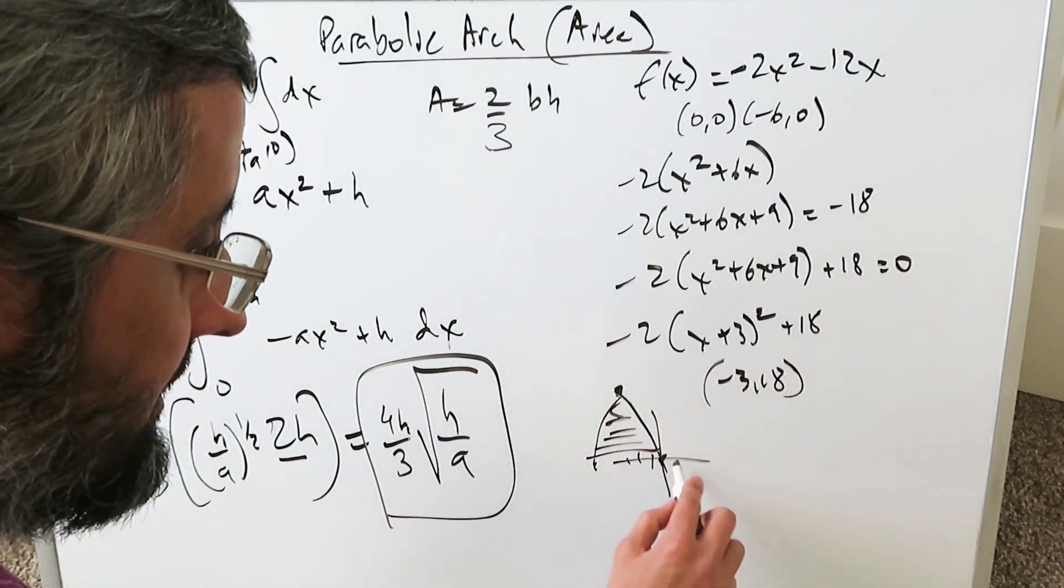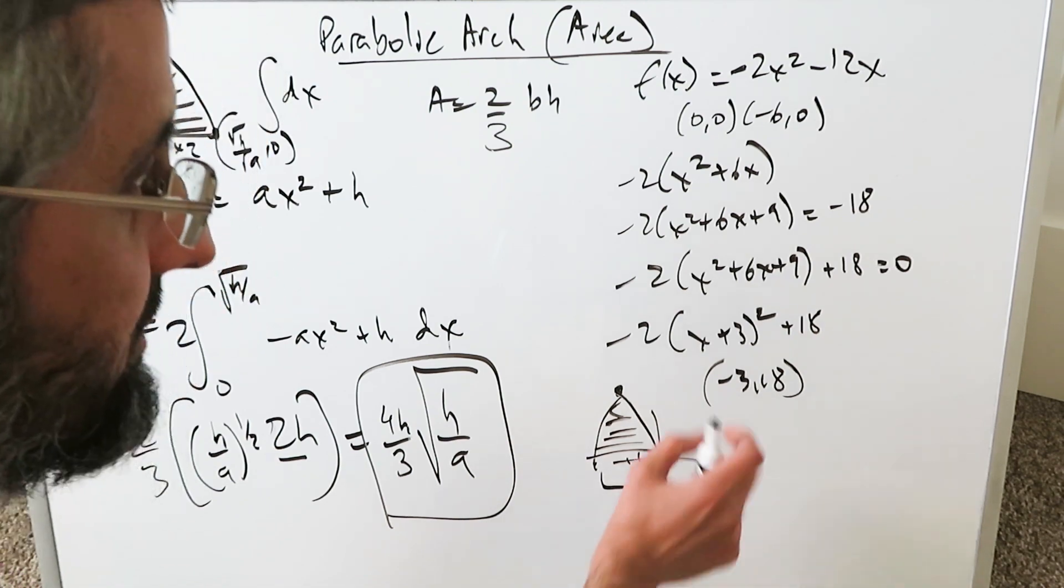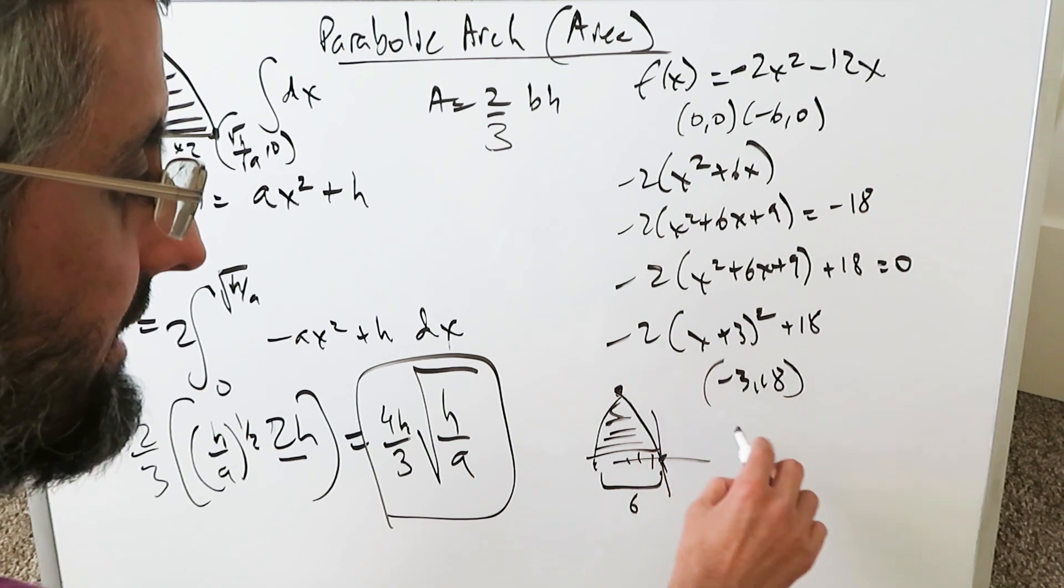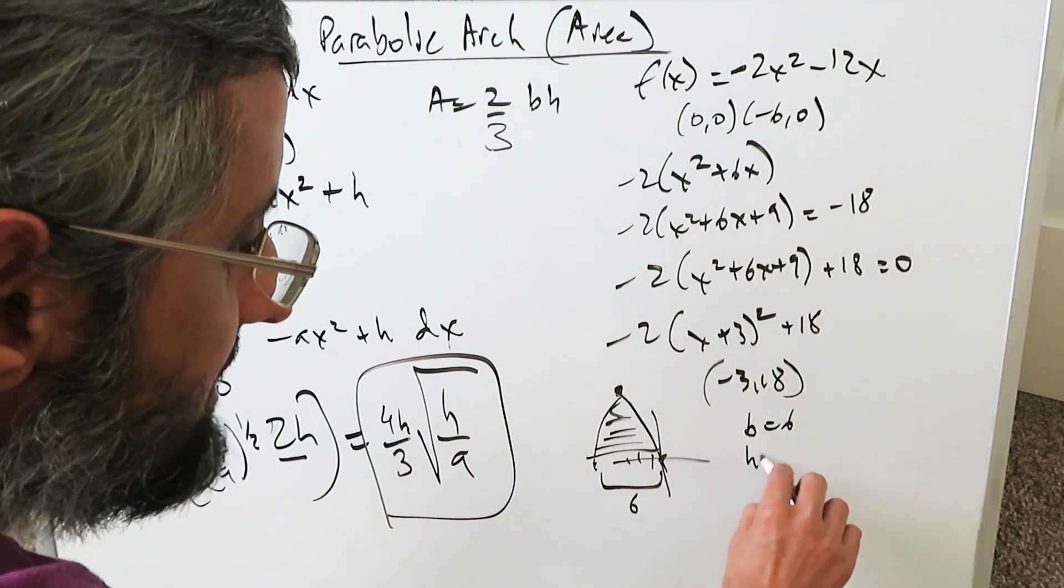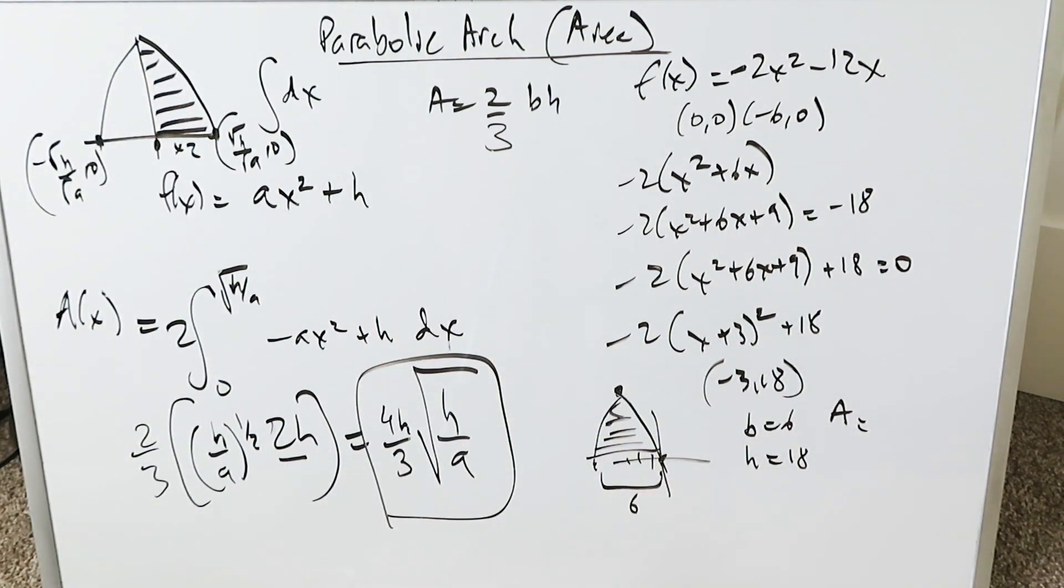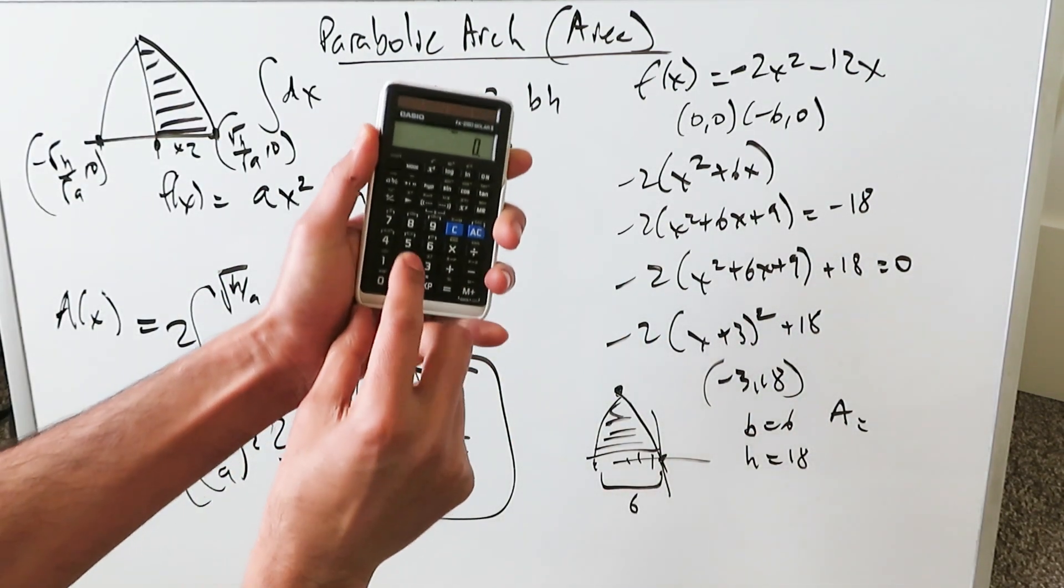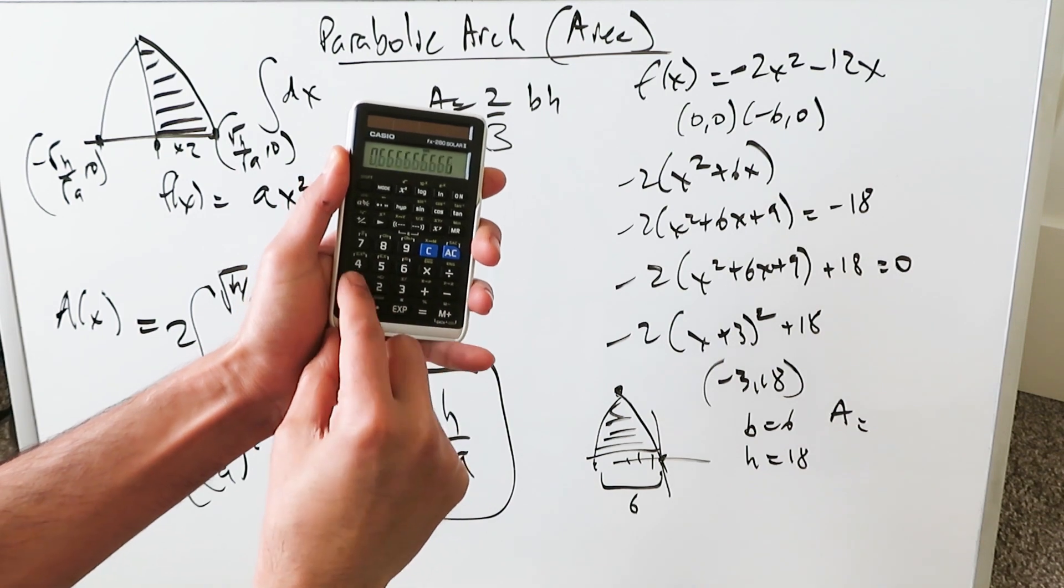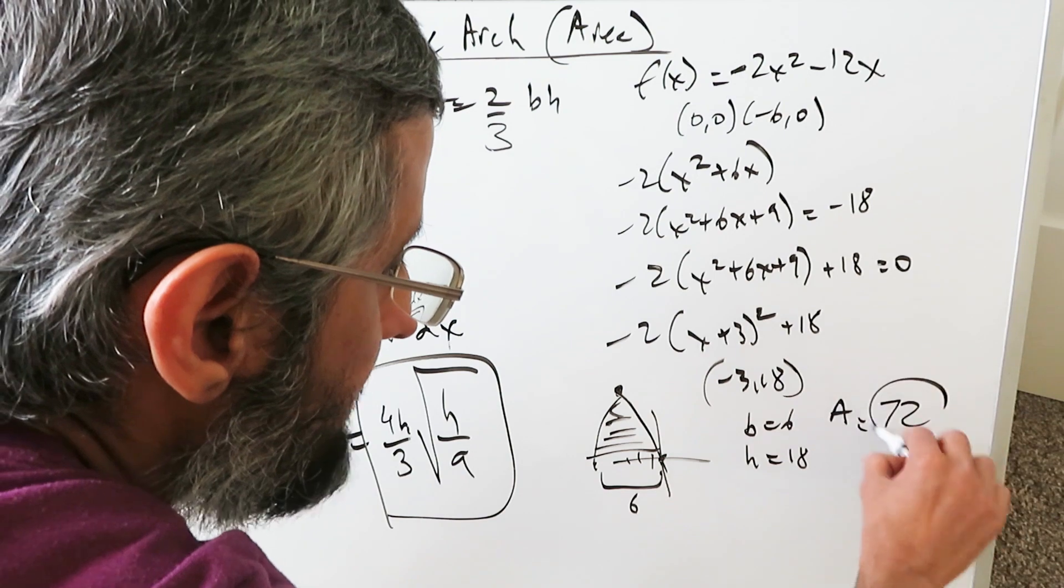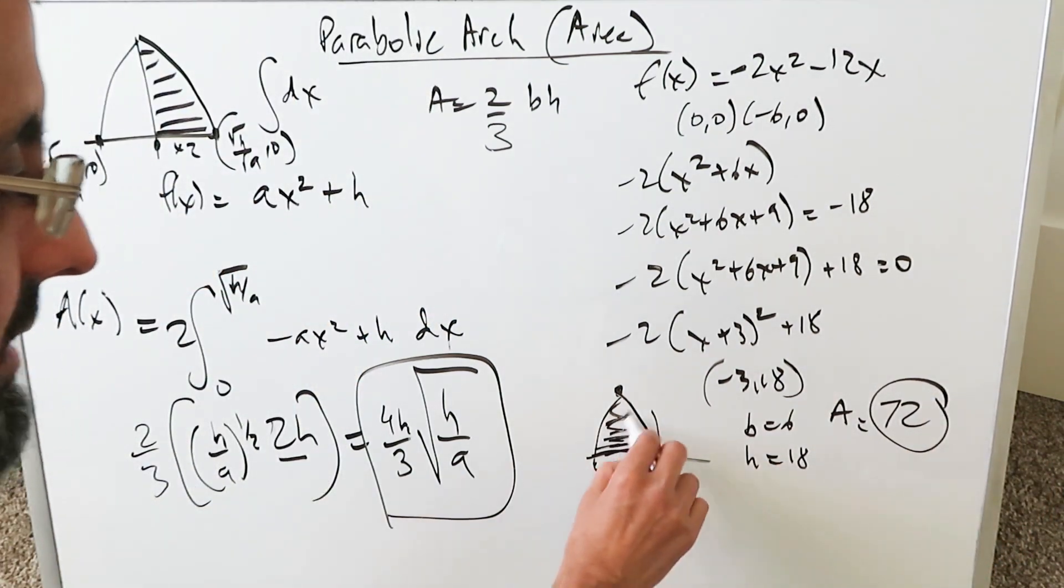But from here you can easily determine my base here is 6 because if you're looking at your x-intercepts the distance here is 6. Your height is 18. Base = 6, h = 18. Area over here based on this formula we will put it in. We'll put it here for you and show it to you. You have 2/3 times 18 times 6. 72 comes out, 72 units squared for this parabolic arch.